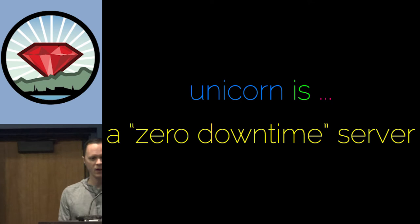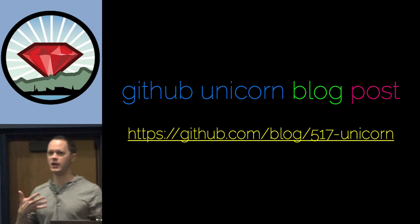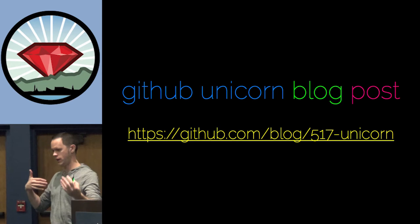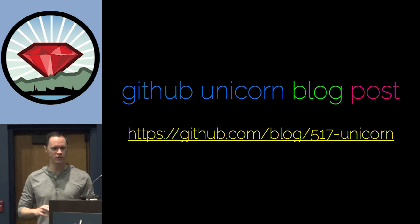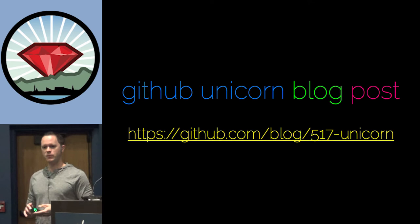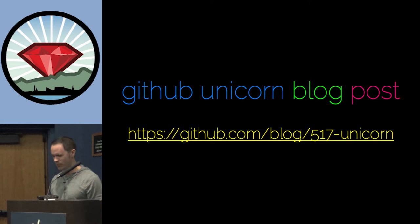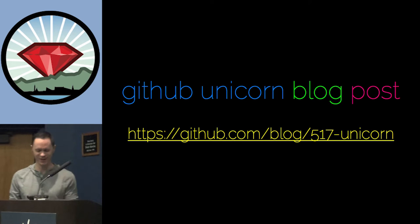If you've been investigating zero downtime and Unicorn, you may have read a blog post from GitHub — there's a link up there — where they talk a little bit about their architecture, Unicorn, and doing zero downtime and how Unicorn supports that. And I'm sure like most of us, when GitHub comes out with a blog post or the GitHub way of doing things, we go 'yes, we must follow the GitHub way now.'